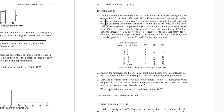The class intervals include the left endpoint but not the right — that's the endpoint convention. For example, from the second line of the table, in 1960 about 14% of the people had completed five to eight years of schooling, eight not included. So it includes the left endpoint but not the right endpoint. In 1991, about 4% of the people were in this category.